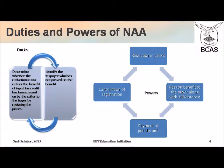The duties of the National Anti-Profiteering Authority are: number one, to determine whether the reduction in tax rate or the benefit of any input tax credit has been passed on by the seller to the buyer by way of a commensurate reduction in price, and to identify those suppliers who, in spite of having received benefits under GST, have not passed on those benefits to their customers.